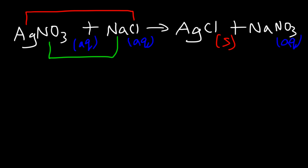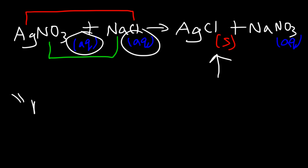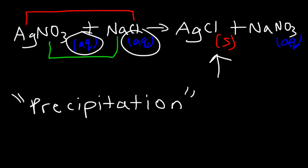This is a double replacement reaction. When you mix two aqueous solutions and get a solid product, this type of double replacement reaction has a special name: a precipitation reaction. By mixing two clear aqueous solutions and getting a visible solid product, you have a precipitation reaction.